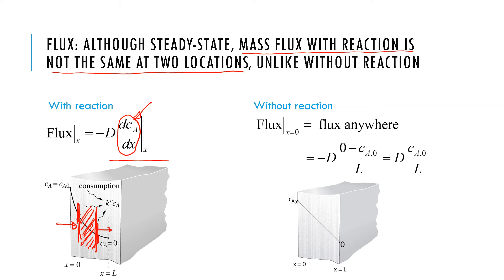To summarize, two different things are of great consequence in the presence of a first-order reaction. First, the concentration profile is not linear but is a curve where the slope keeps dropping, so concentration decays faster. And the flux at the surface is higher. Those are the two big differences between without reaction and with reaction.